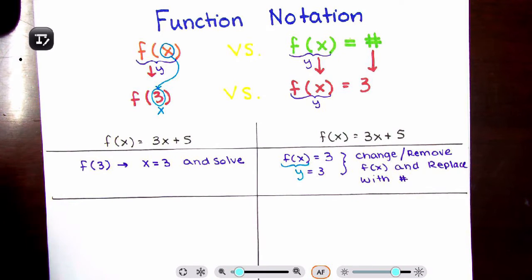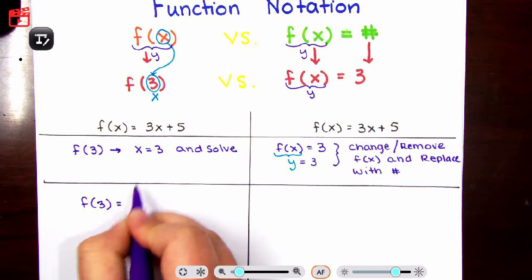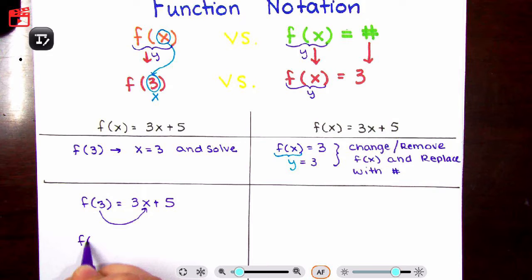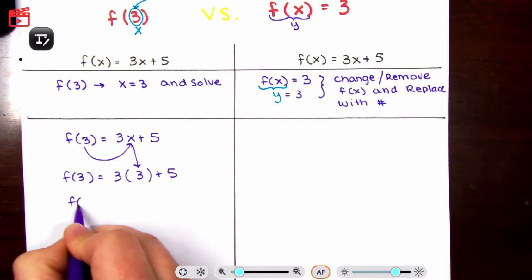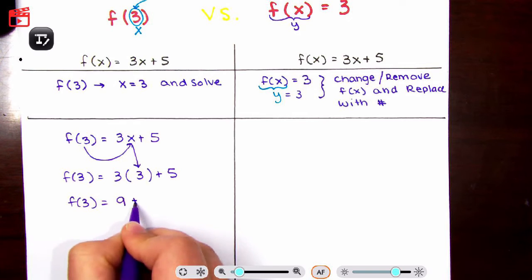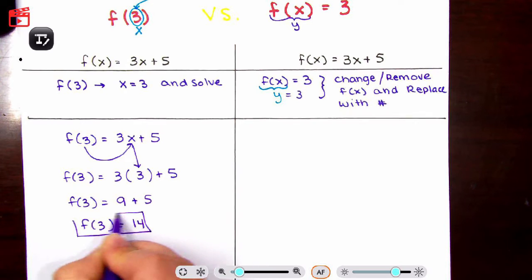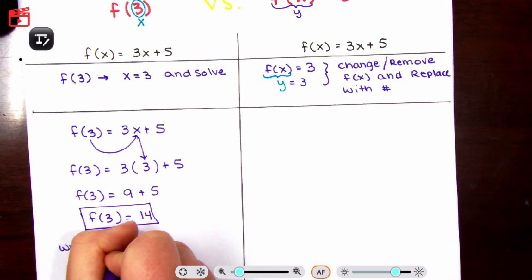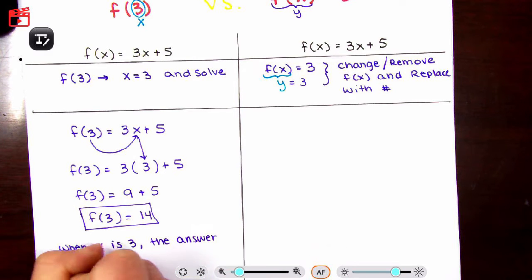Let's do one at a time. So let's do this one — this is the one we did last time as well. f of 3 is equal to, copy down the equation, 3x plus 5. f of 3 is equal to 3 times 3, which is 9 plus 5. And 9 plus 5 is equal to 14. So f of 3 is equal to 14.